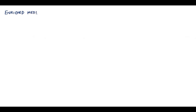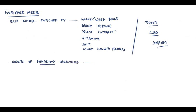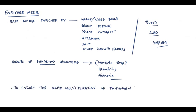Enriched media is basically a basic media which is enriched by whole or lysed blood, serum peptone, yeast extract, vitamins, salt and other growth factors. For the sake of simplicity, just remember blood, egg and serum can be used. These media are used to grow fastidious organisms, which means they have complex nutritional requirements. Such organisms are hemolytic streptococcus, Haemophilus and Neisseria. They ensure the rapid multiplication of pathogen which may be present in small numbers.